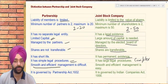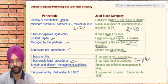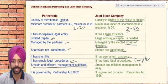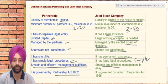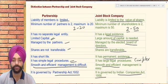Smooth and efficient management is difficult in case of a partnership firm, whereas a joint stock company, being flexible in nature, can be efficiently and smoothly managed. A partnership firm is governed by the Partnership Act 1932, whereas a joint stock company is governed by the Indian Companies Act 1956.